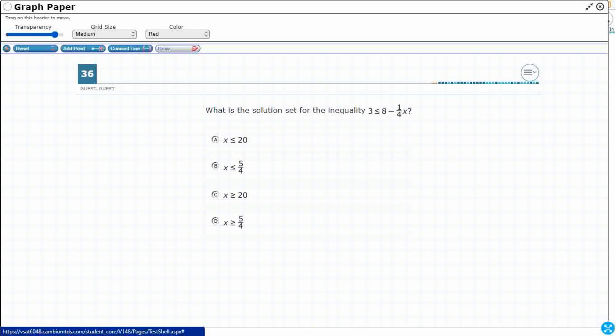So we need to isolate this variable. Let's do that one step at a time. I'm going to write this out a little bit bigger. 3 is less than or equal to 8 minus 1/4 x.